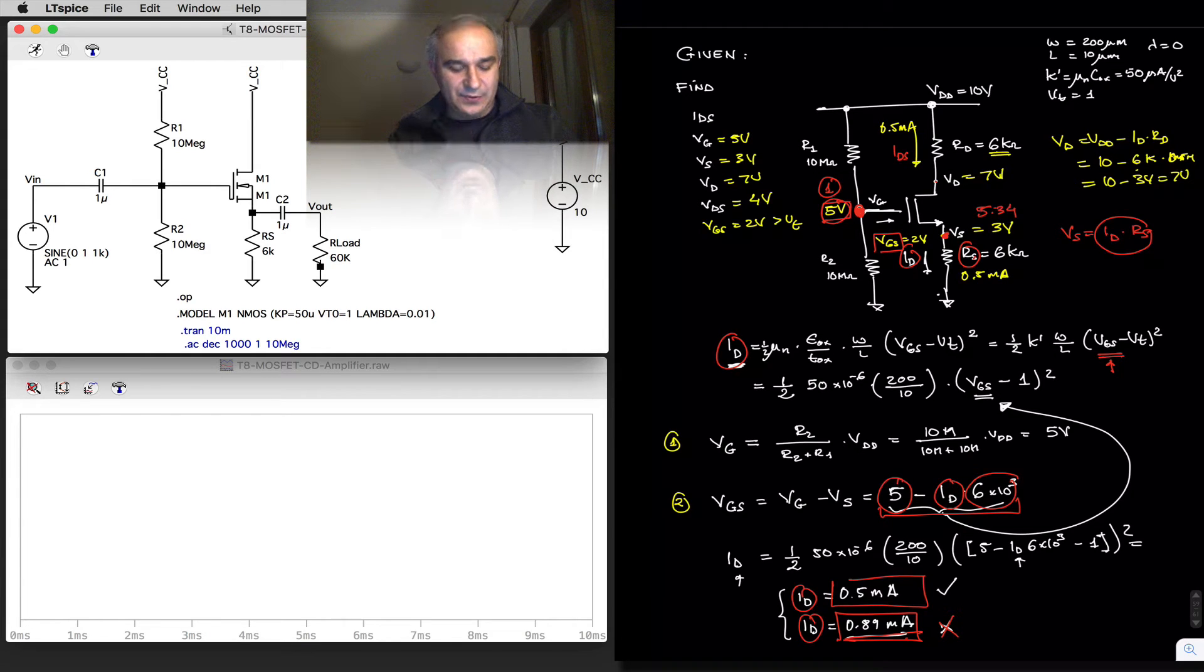Hello. So in the previous example, we used a four-resistor network to bias a MOSFET. And since we had centered the gate, we could use this also to create a common drain amplifier, also known as a source follower.